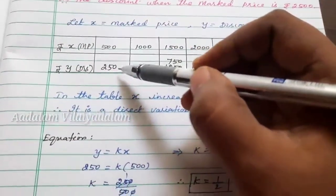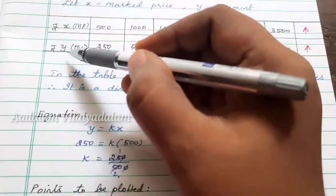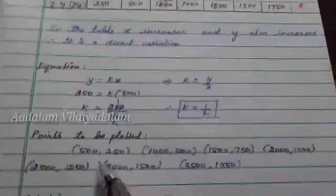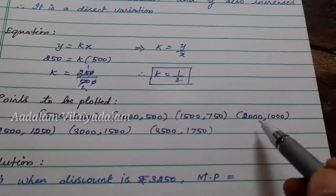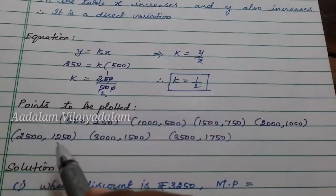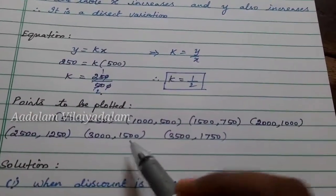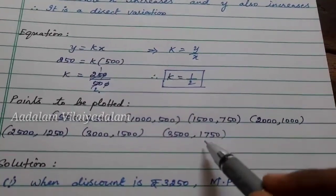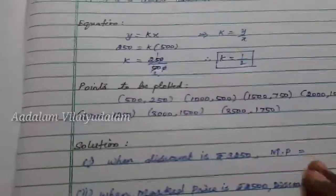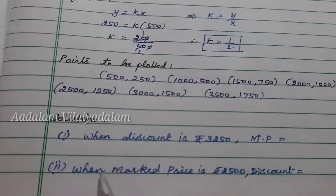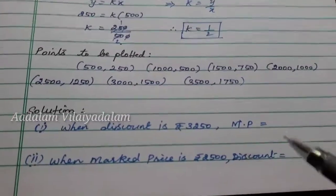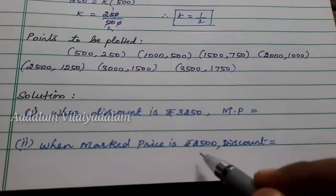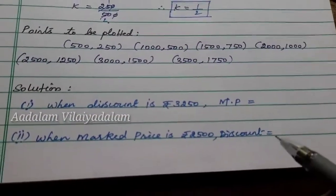Points to be plotted from the table: (500, 250), (1000, 500), (1500, 750), (2000, 1000), (2500, 1250), (3000, 1500), (3500, 1750). For the graph, mark the x-axis, y-axis, origin, and axes labels. The scale is x-axis: 1 centimeter equal to 500 units, y-axis: 1 centimeter equal to 500 units. X represents marked price and Y represents discount.